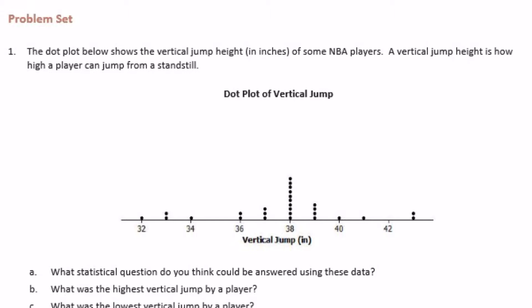6th grade module 6 lesson 2 problem set number 1. The dot plot below shows the vertical jump height in inches of some NBA players. A vertical jump height is how high a player can jump from a standstill. So here's the plot. It shows it ranges anywhere from 32 inches to looks like this would be 43 inches.